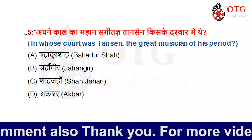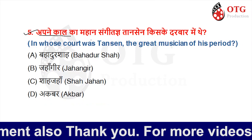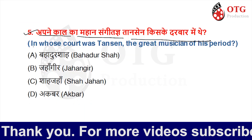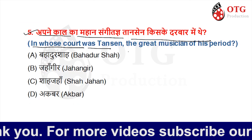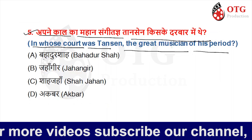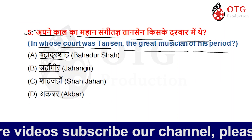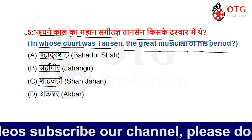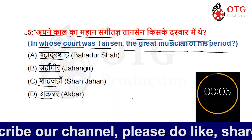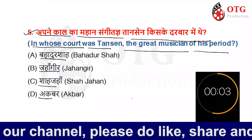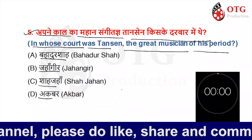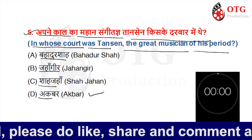In whose court was Tansen, the great musician of his period? Option A is Bahadur Shah, Option B is Jahangir, Option C is Shah Jahan, and Option D is Akbar. Your time starts now. The right answer is Akbar.